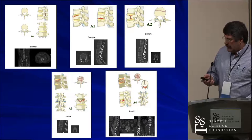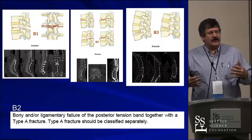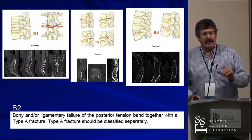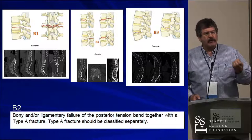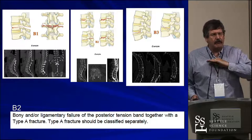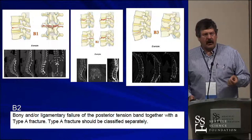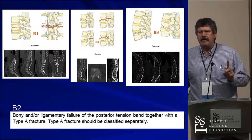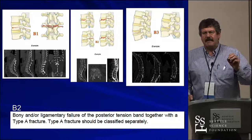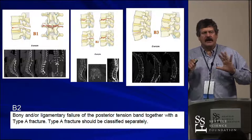The B injuries are our flexion distraction injuries — when the posterior ligamentous complex is disrupted. B1 is the true bony chance fracture, which is what Chance originally described: pure bony, through the pedicles and bony posterior elements. It's almost exclusively a pediatric fracture from a seatbelt injury, and it's important because it may be the only B injury that can be treated non-operatively. B2 covers all the other flexion distraction injuries — partly bone, partly ligament, through the facets, pure ligamentous — it doesn't matter. The posterior ligamentous complex is disrupted. This is a large group.